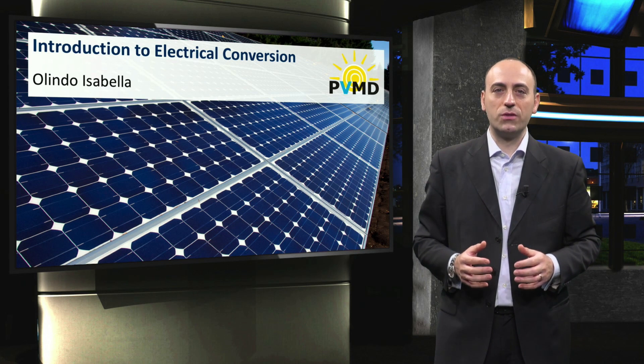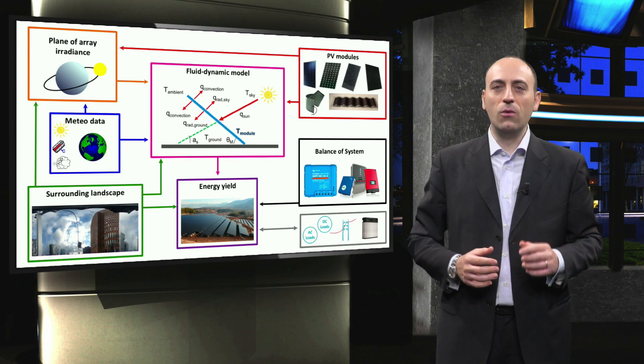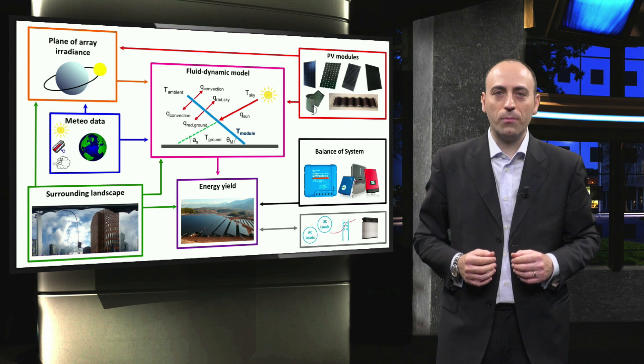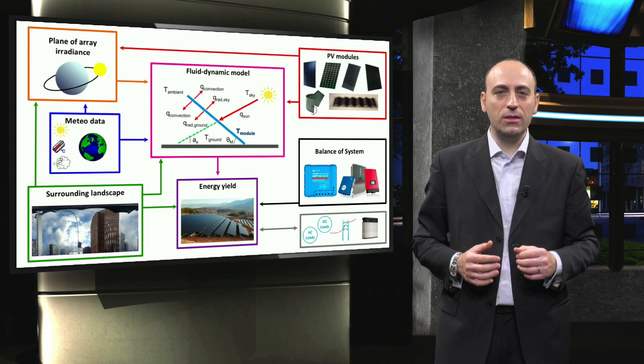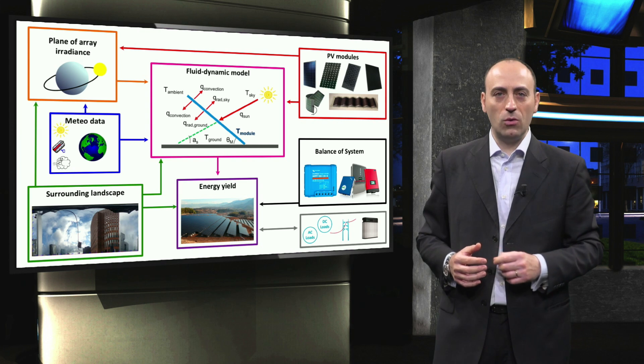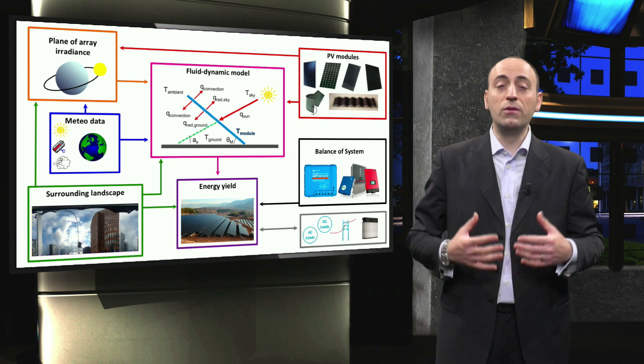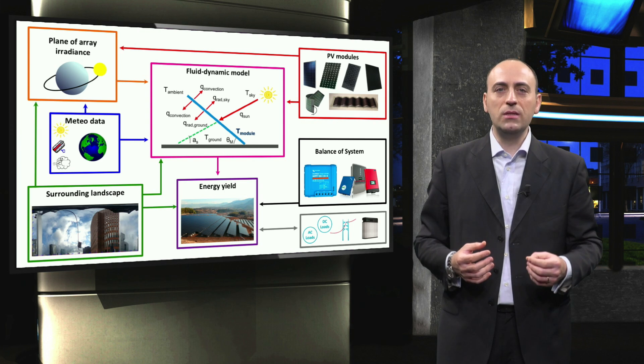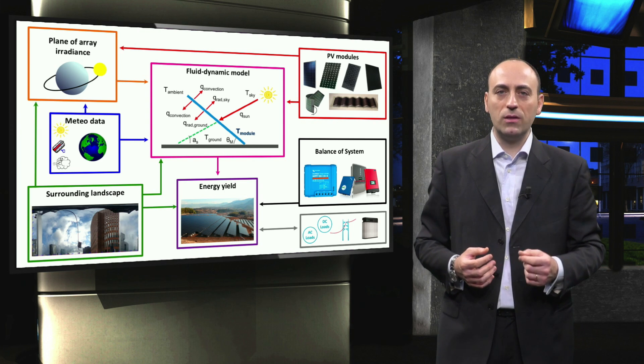Welcome to the sixth week of this course. As usual, let's take a look at the PV system design overview. We started with location-related issues, followed by the PV modules. Such design aspects lead to the fluid dynamic model, with which the DC yield of PV modules can be accurately predicted.